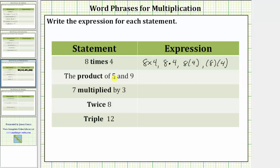Next, we have the product of five and nine. The word product represents multiplication. And therefore, the expression is five times nine.